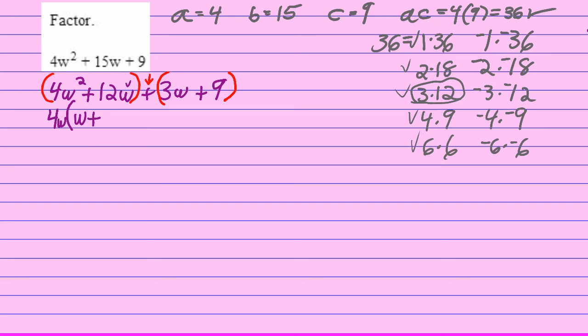4w times what is going to equal 12w? Well, that's 3. 4w times 3 is 12w. Now I have factored the first set of parentheses by the GCF, and in fact I ought to be able to multiply them back together, 4w times parentheses w + 3, parentheses closed, and get exactly what I started with.